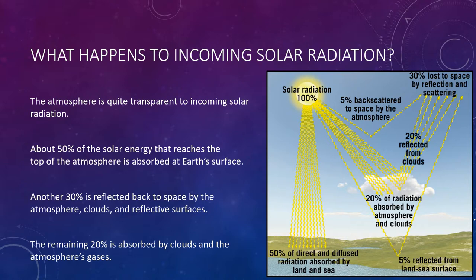This figure shows the fate of incoming solar radiation averaged for the entire globe. The atmosphere is quite transparent to incoming solar radiation. On average, about 50% of the solar radiation that reaches the top of the atmosphere is absorbed at Earth's surface. Another 30% is reflected back into space by the atmosphere, clouds, and reflective surfaces. The remaining 20% is absorbed by the clouds and atmospheric gases.